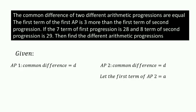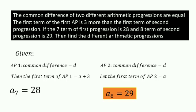Let the first term of the second AP be A. Then first term of first AP is A plus 3. What has been given for the first progression A7? That is 28. Eighth term of second progression is 29.